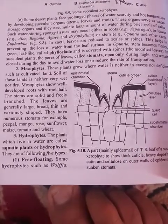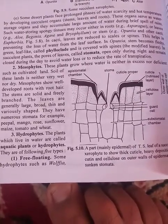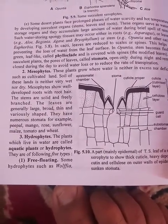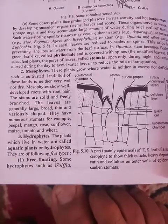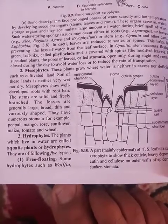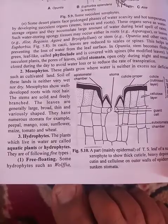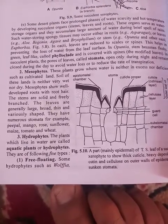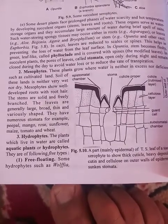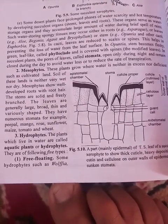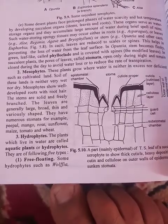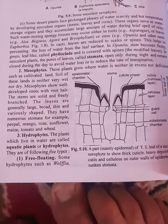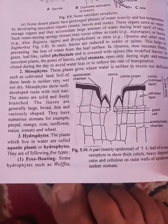Mesophytes are the main source of food on the surface of the earth because they include all types of vegetable plants and all types of fruit plants. Another category is hydrophytes, which will be discussed in a later video.